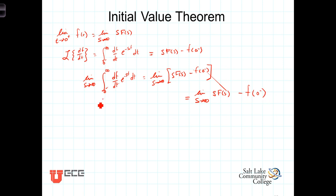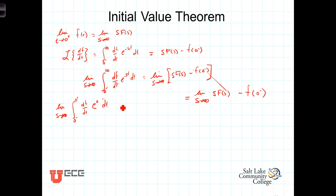On the left-hand side, we're going to break the integral up into two regions. The first is the limit as s approaches infinity of the integral from 0 minus to 0 plus — just across the origin — of (df/dt)·e^(−st) dt, where because t is only evaluated at 0 we can call this e^0 dt. Plus a second term: the limit as s approaches infinity of the integral from 0 plus to infinity of (df/dt)·e^(−st) dt.